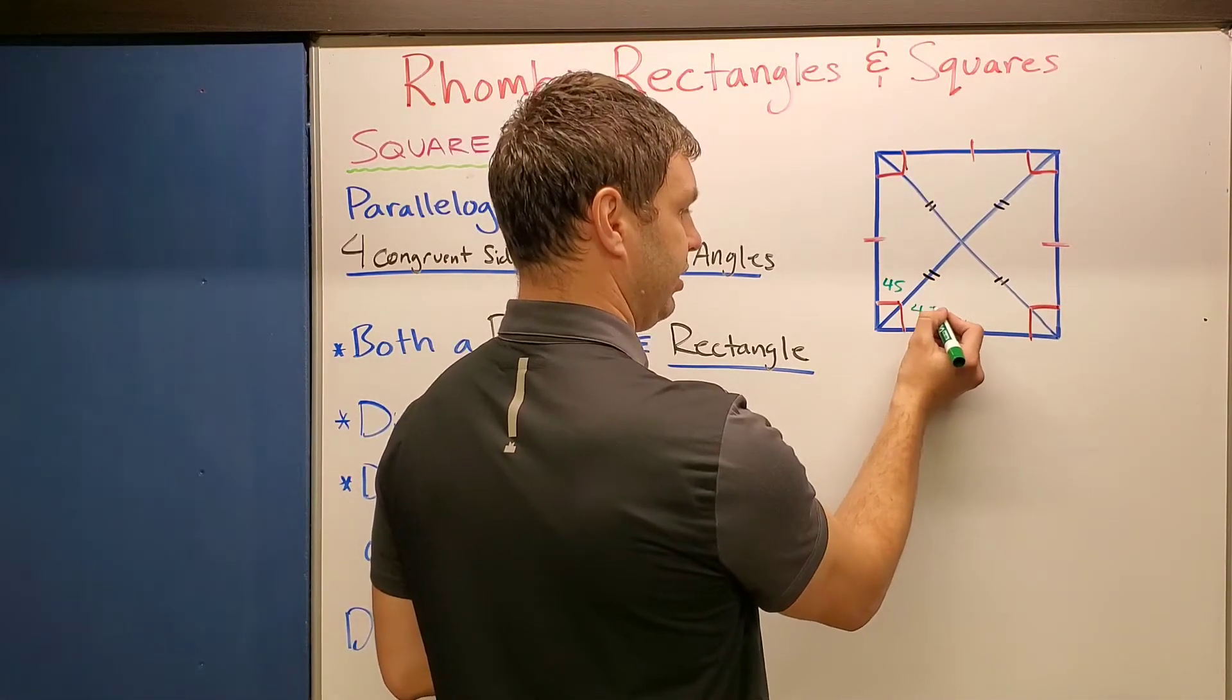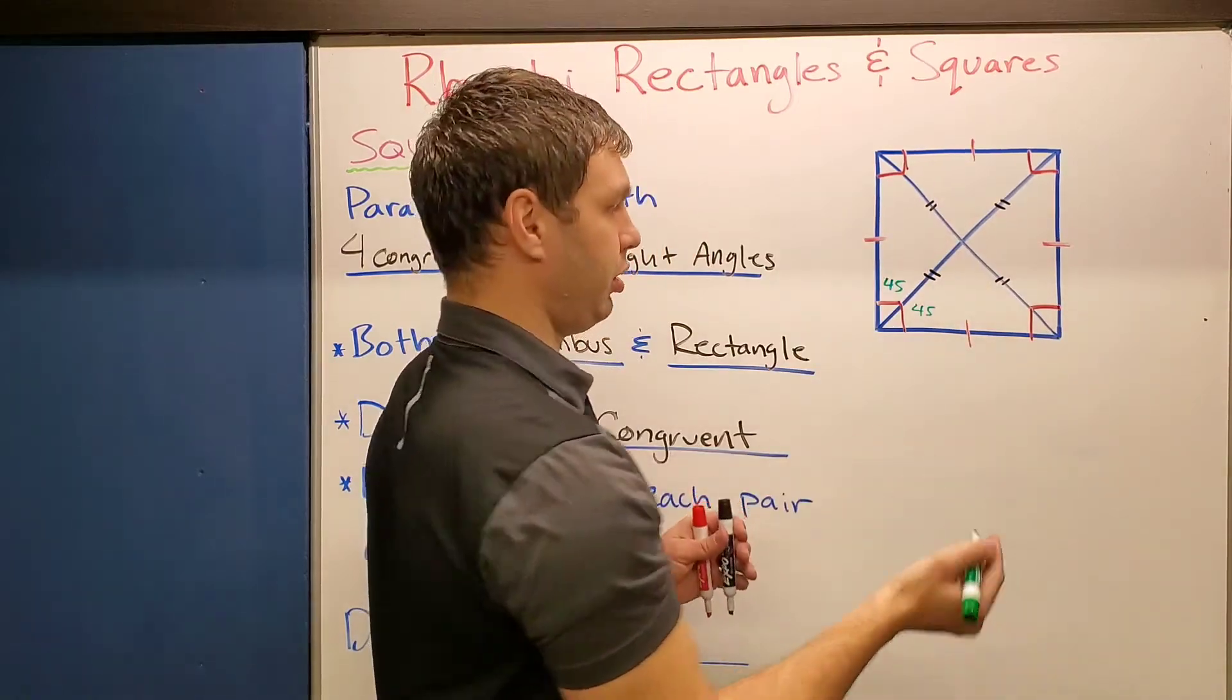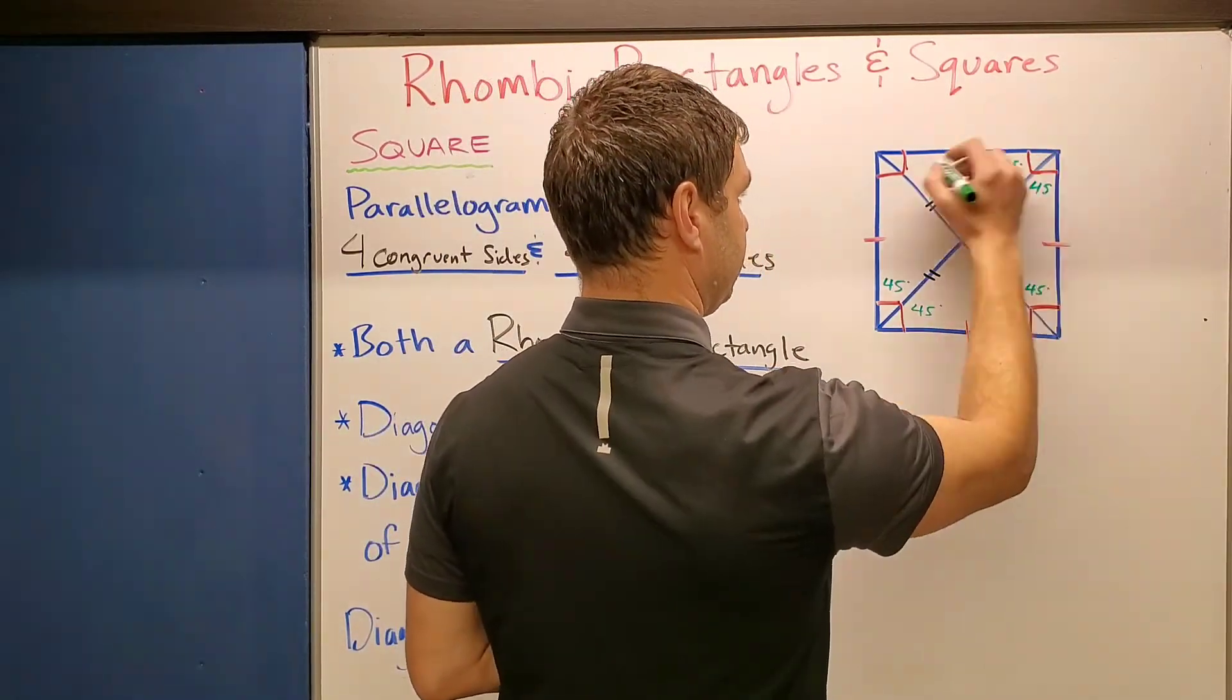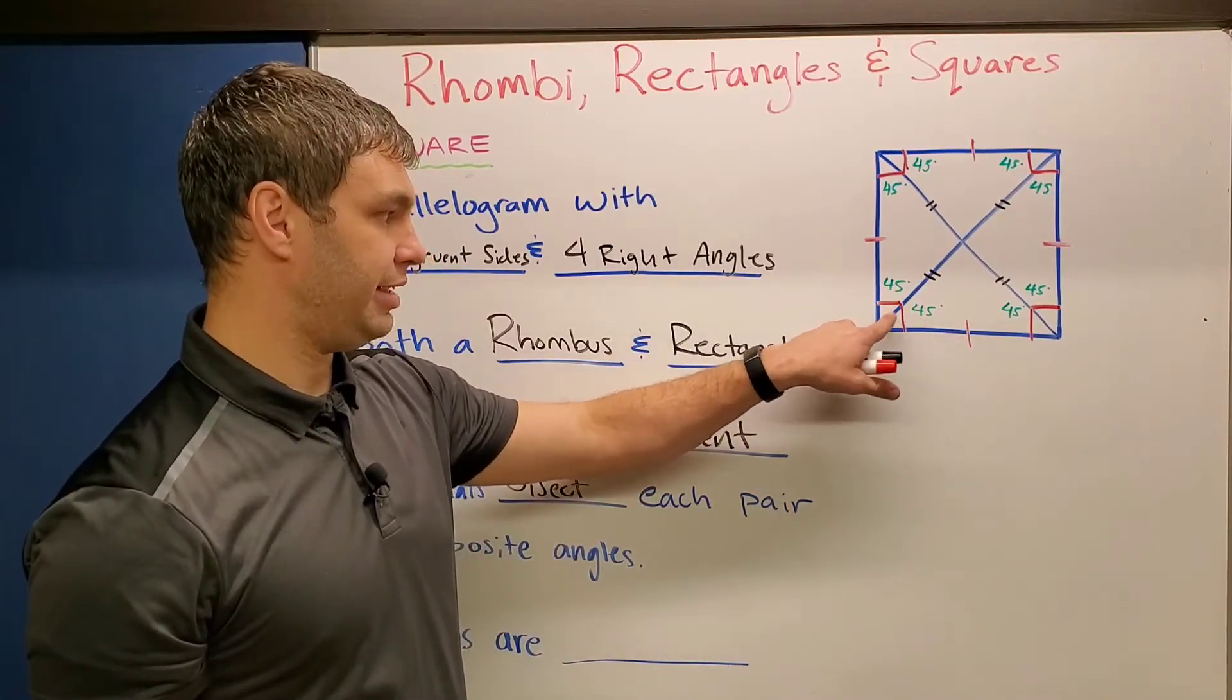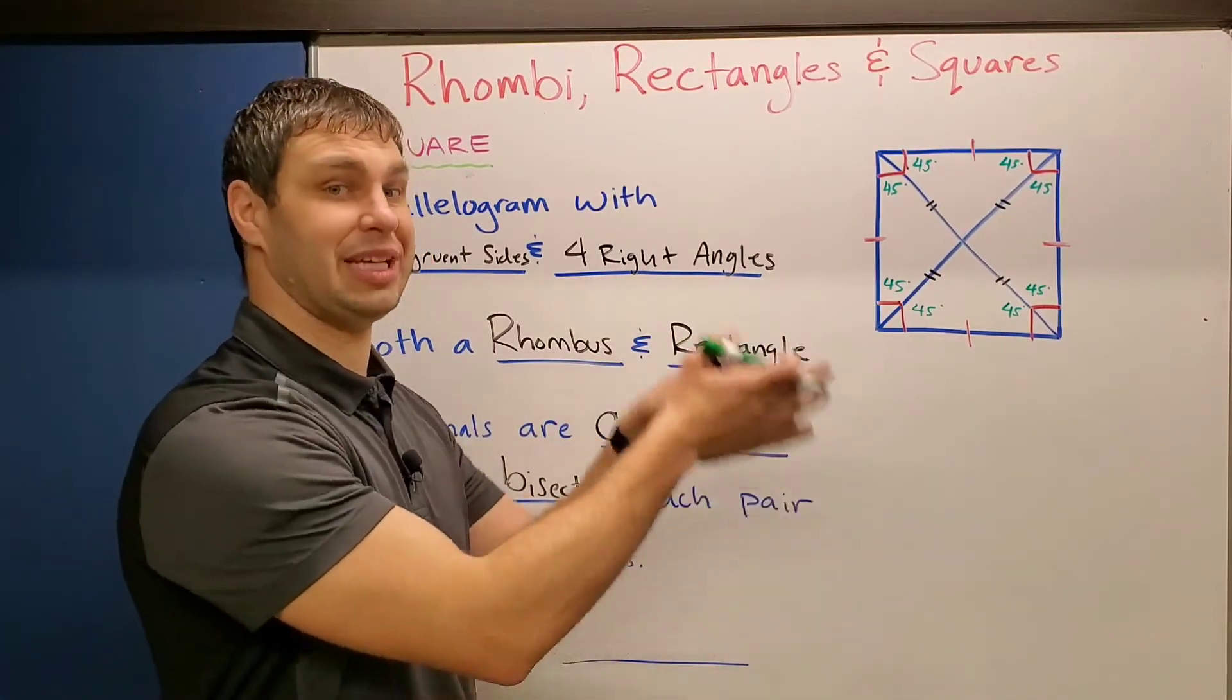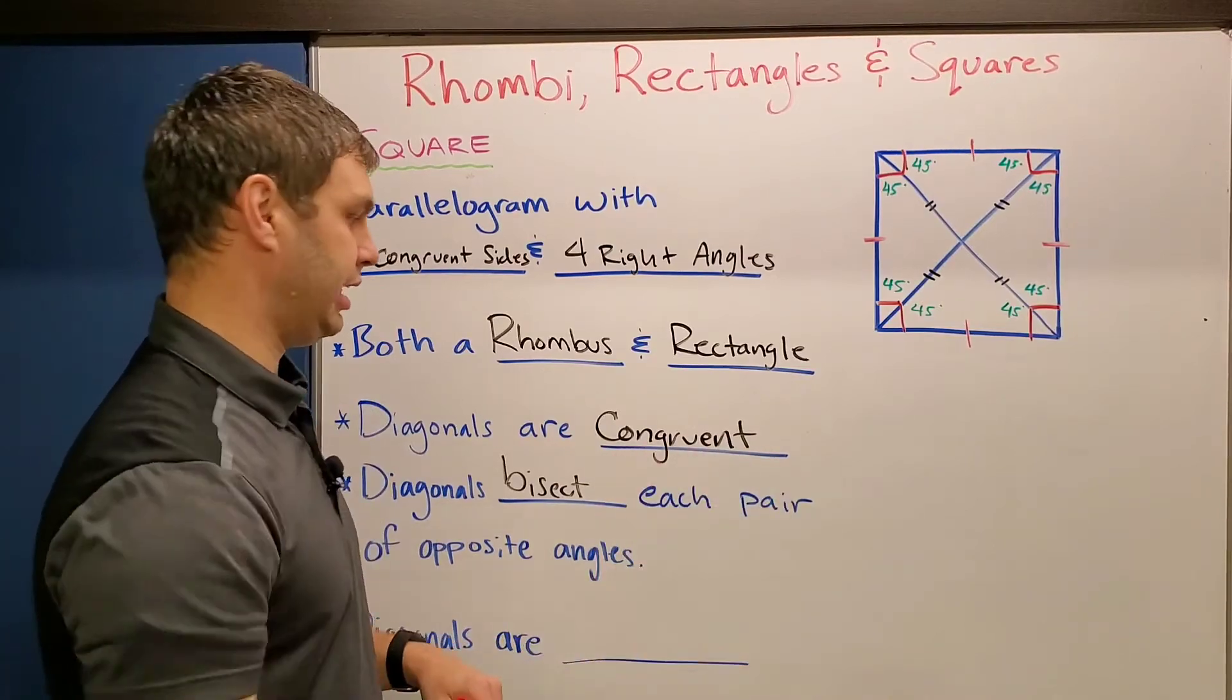So I can put in a 45 in each of these corners. Alright. And again, that has to be true because 45 plus 45 is 90. And if they're being bisected, those have to be the same number. Alright. Or 90 divided by two.